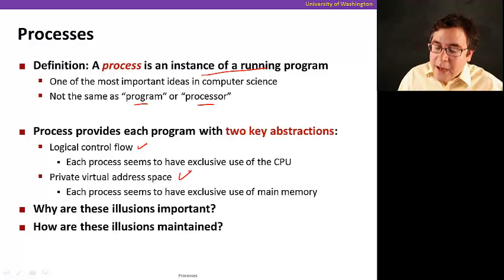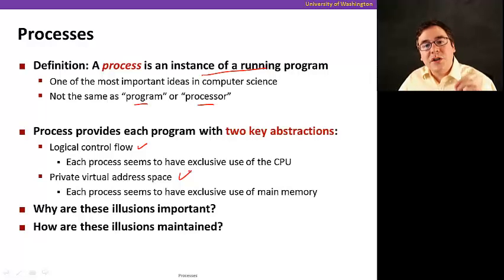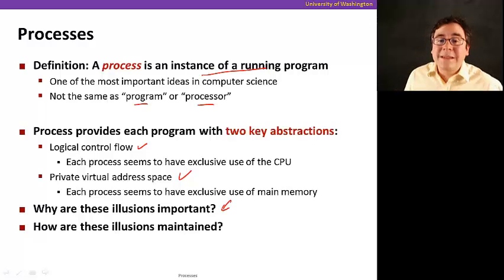And the other one is private virtual address space. It means that this gives the illusion that each process has control over the entire memory. Nobody else is touching memory. So this is very important because it makes it much easier to isolate programs, to manage memory layout, and so on. So, why are they important? Well, it simplifies writing programs a lot, because you give the illusion that the program has entire memory, and also gives it the illusion that it has complete control of the processor, complete use of the processor.